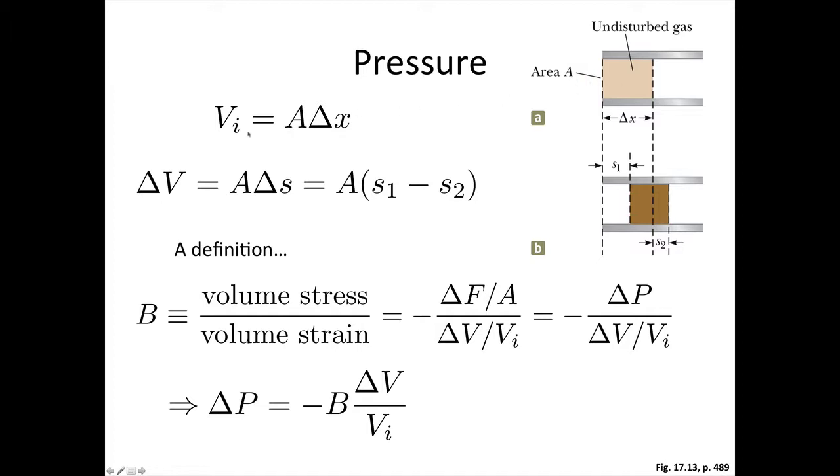So initially, before there's any wave, we're considering a volume of air here. And the volume is given by the cross-sectional area times the length of the tube. And then we put our pulse through the air here.